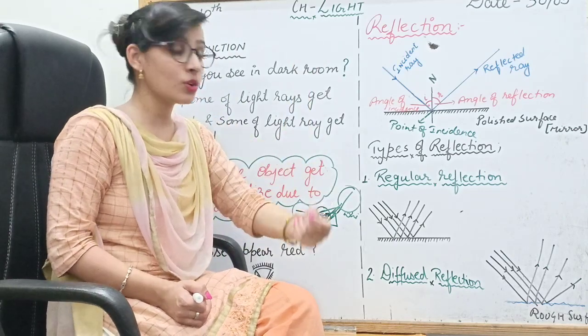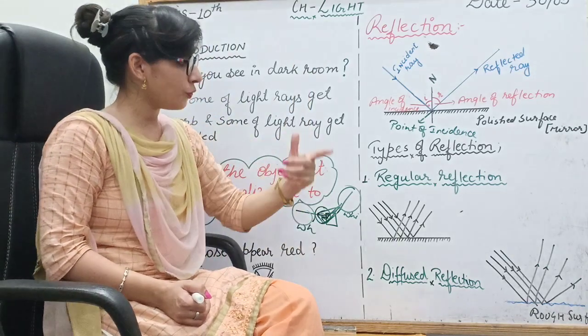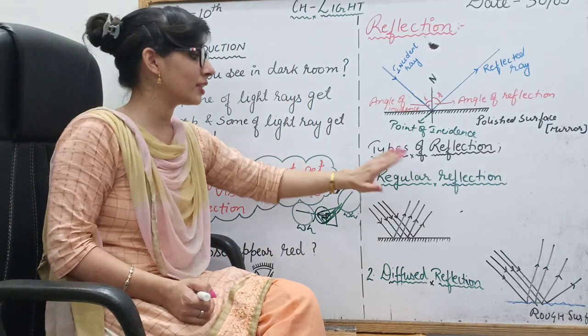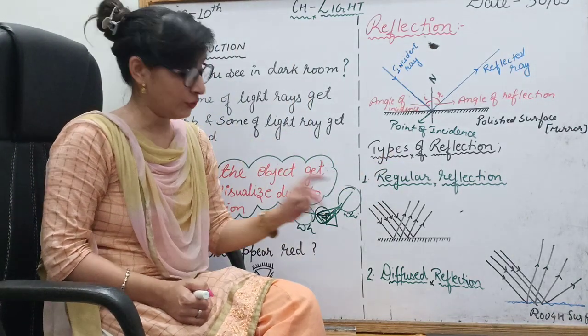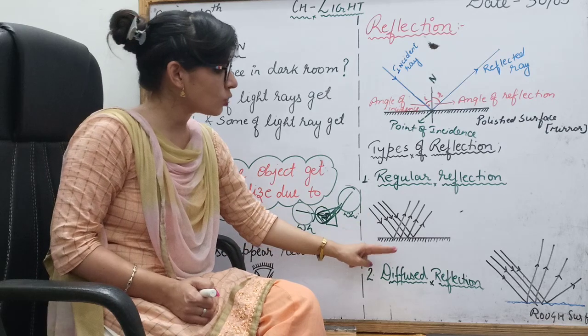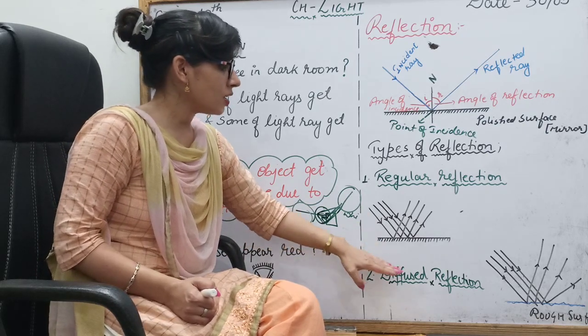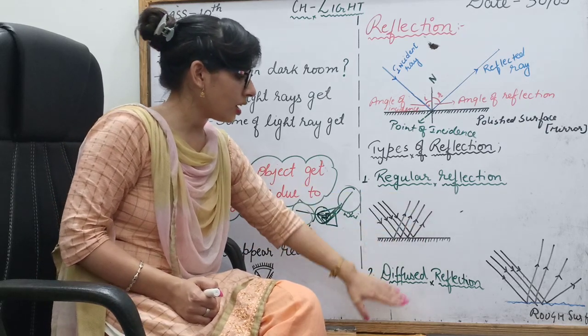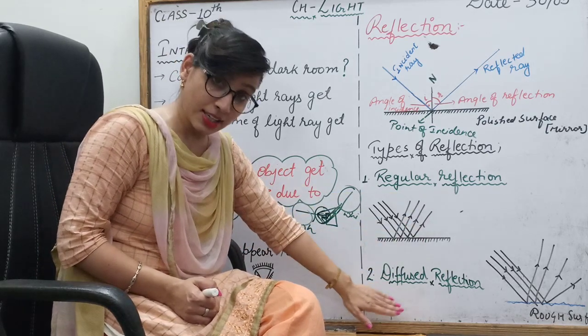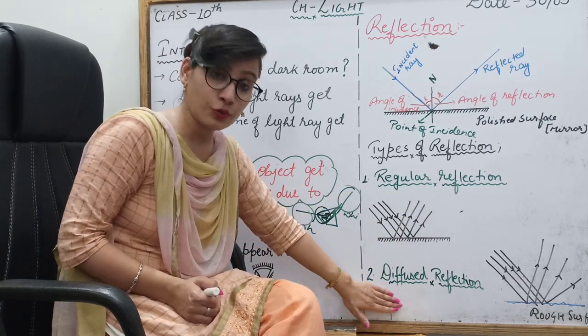This is the diagram of reflection — showing how a light ray gets incident and how it gets reflected. Now let's look at the types of reflection. There are two types of reflection: one is regular reflection, and the other is irregular or diffused reflection.